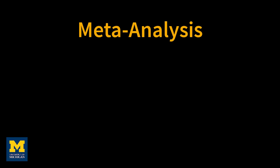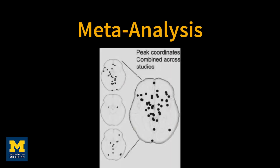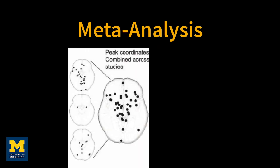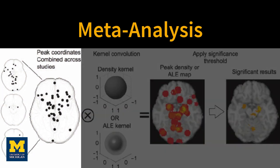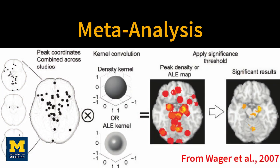The concept is simple. By taking the average of peak activations across hundreds or thousands of other experiments, we can create maps of where there is overlap among them.